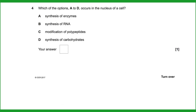Question four: which process occurs in the nucleus? The key word is 'in.' Synthesis of enzymes occurs at ribosomes in the cytoplasm, not the nucleus. Modification of polypeptides occurs in the Golgi apparatus. Synthesis of carbohydrates doesn't occur in the nucleus. Synthesis of RNA — specifically messenger RNA — is transcription, which definitely occurs in the nucleus. So the answer is B.